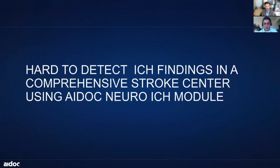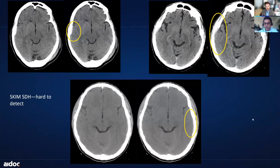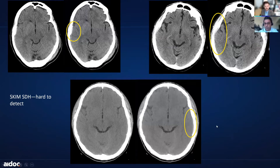Since we're a comprehensive stroke center, we also get our fair share of intracranial hemorrhages. I wanted to review the intracranial hemorrhage module from ADOC that we've been using. We do get a fair amount of trauma patients, and it's been very impressive to see the detection abilities of ADOC for these very subtle thin subdural hemorrhages that can be very hard to detect on a routine day, so that we can follow these patients appropriately in 24 hours to make sure there's no worsening and we don't miss any findings.